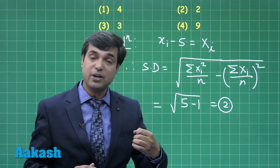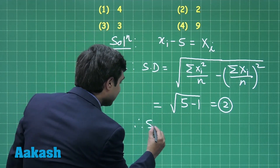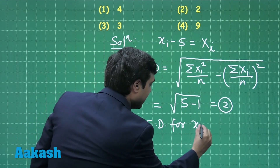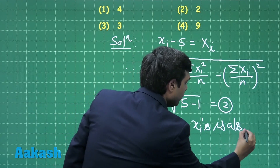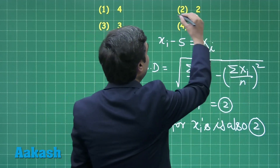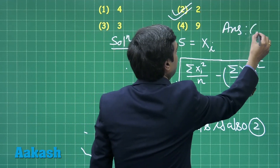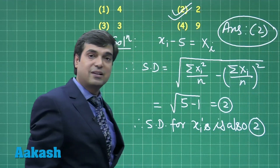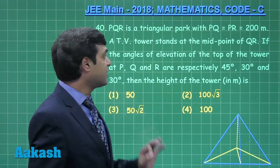Standard deviation does not change when we add or subtract a constant quantity from all elements of data. So the standard deviation for the original xi is also 2. The correct answer is option number 2.